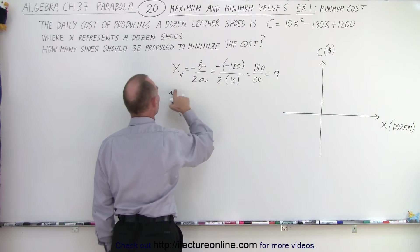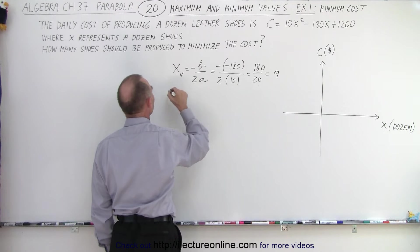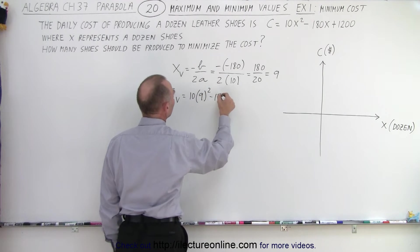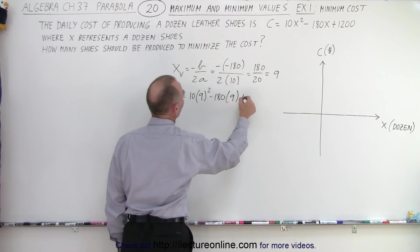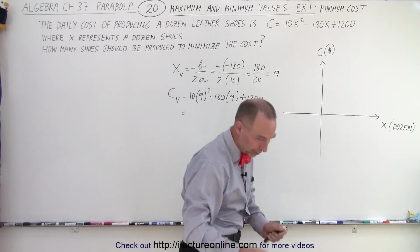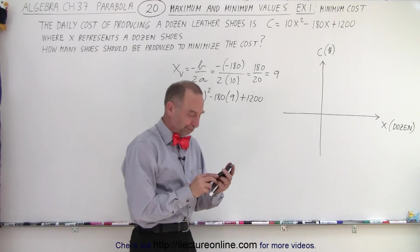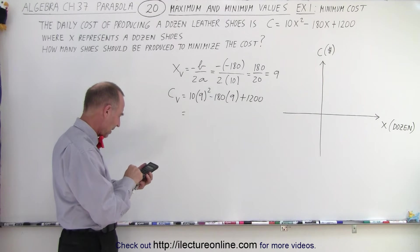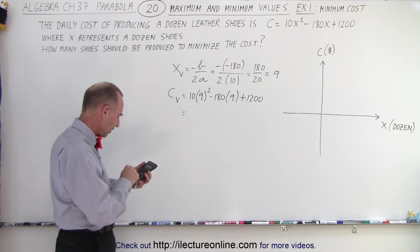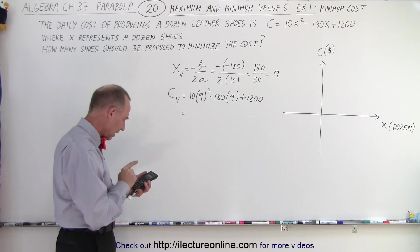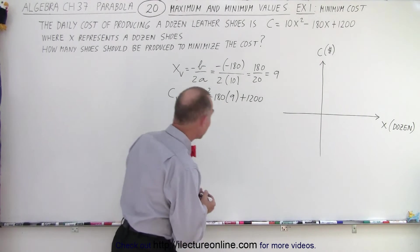So, y, in this case, of course, instead of y, we'll probably go ahead and put in c. That would be 10 times 9 squared, minus 180, times 9, plus 1,200. Okay, I think at this point, I will grab a calculator. So, 9 squared, that would be 81, times 10, minus 180 times 9, and then plus 1,200. And that gives us $390.